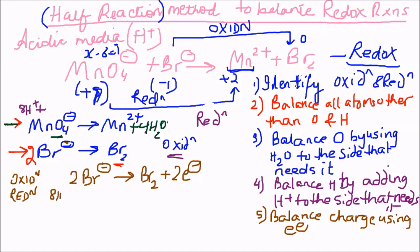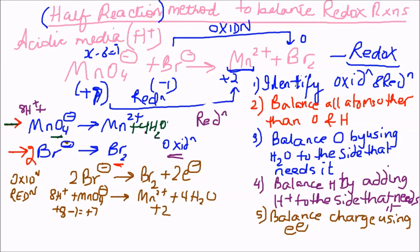For the reduction half, I have eight protons and one permanganate: eight positive charges plus one negative gives seven positive charges on the left. On the right I have only two positive charges. So I need to add five electrons to the left-hand side to balance: MnO4⁻ + 8H⁺ + 5e⁻ → Mn2+ + 4H2O.